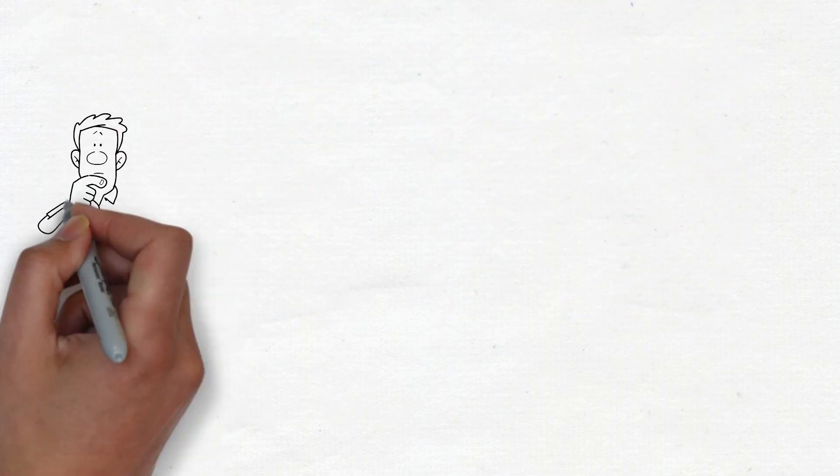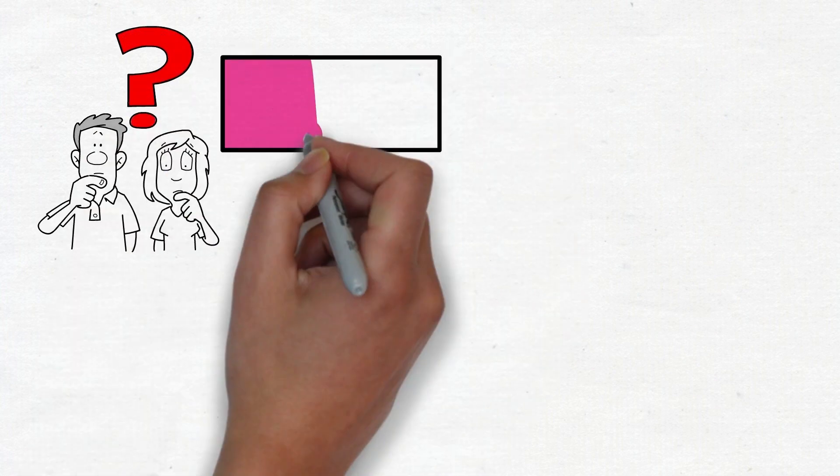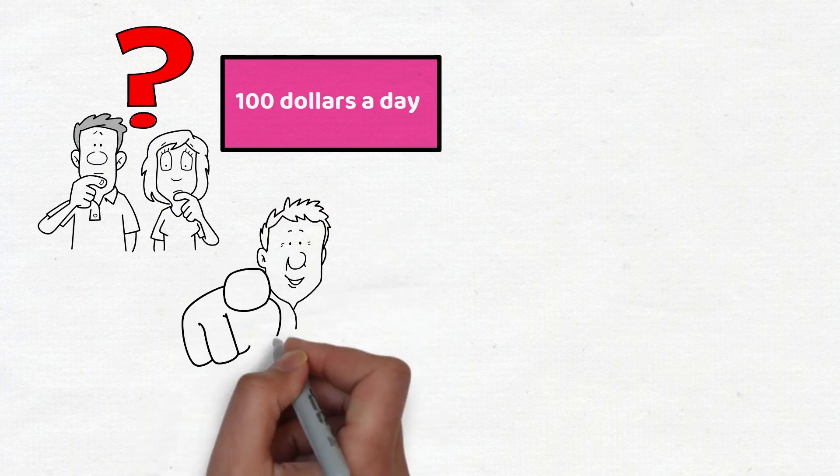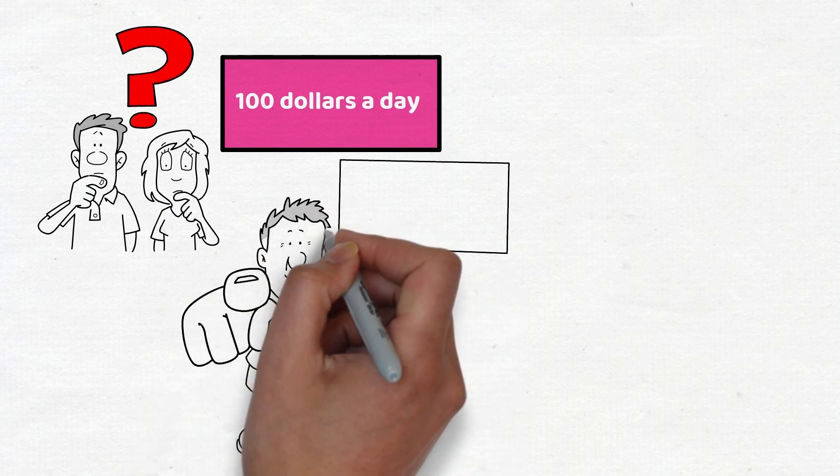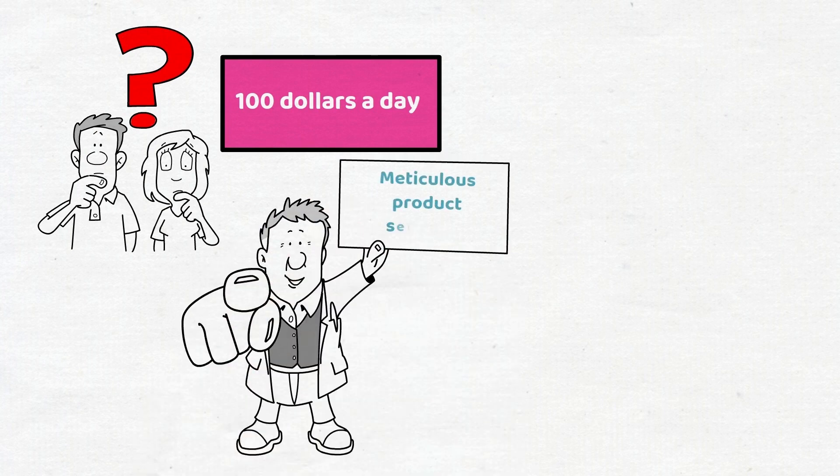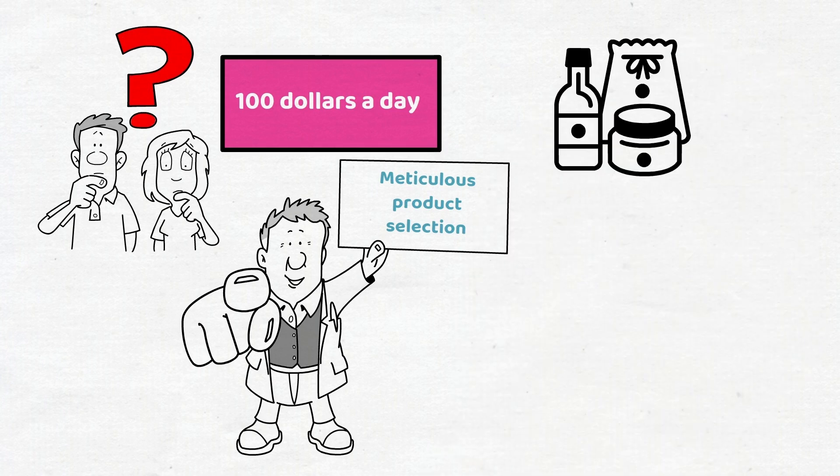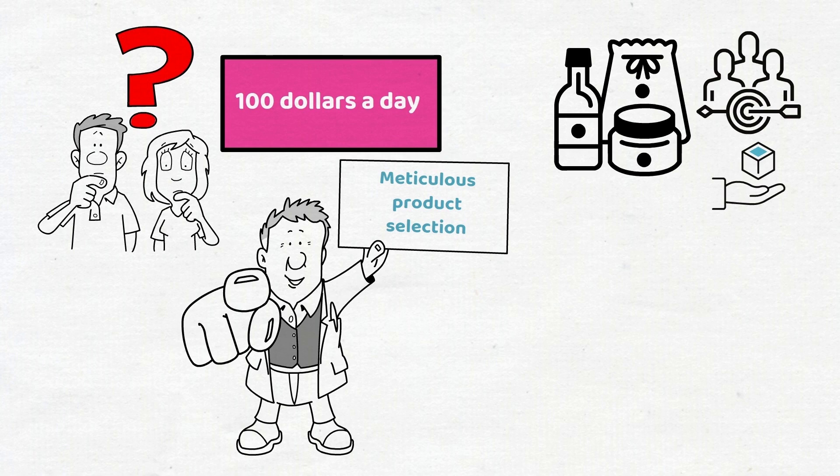So what's the secret to making significant profits, say $100 a day, through dropshipping? The answer largely lies in an often overlooked but utterly vital step: meticulous product selection. The best dropshippers know it's not just about selling any item but offering products that truly resonate with their target audience.